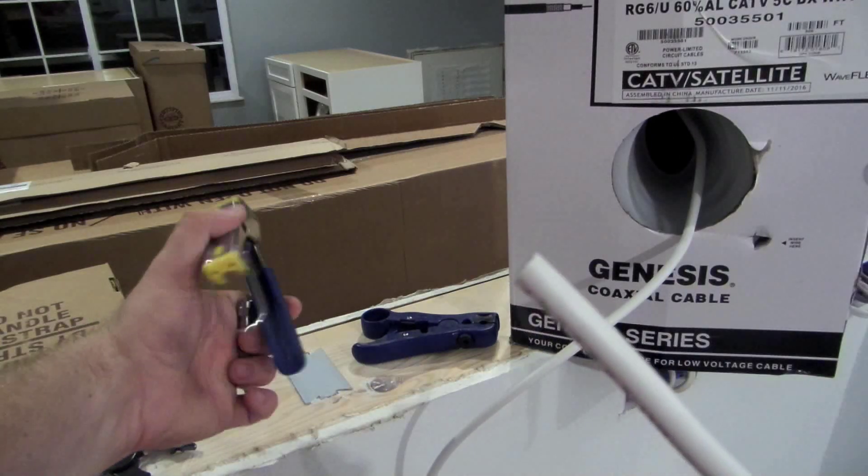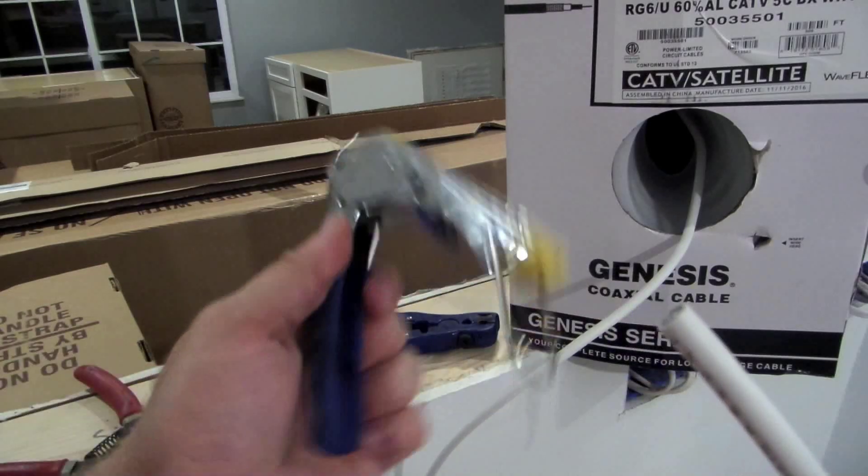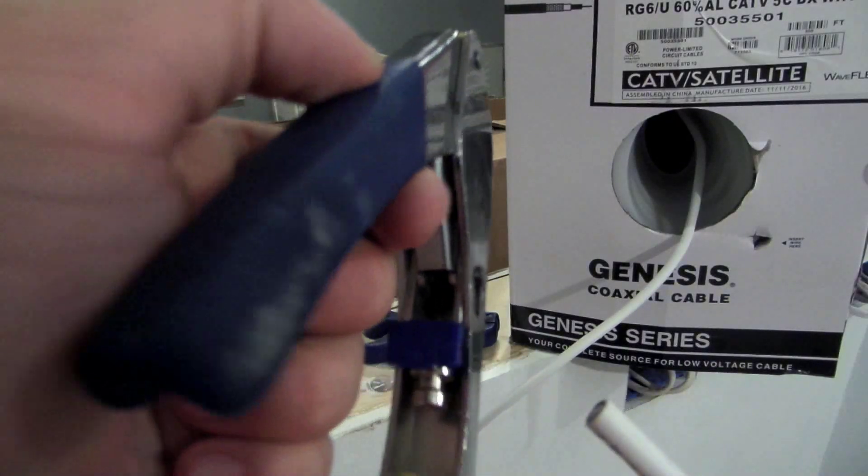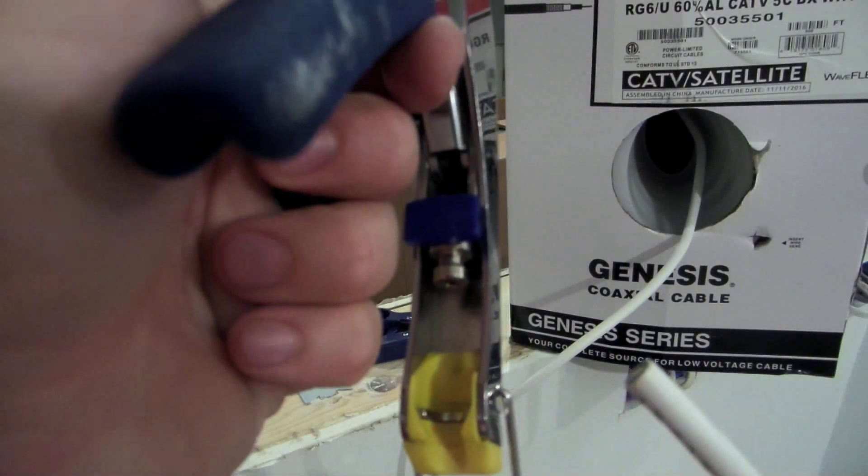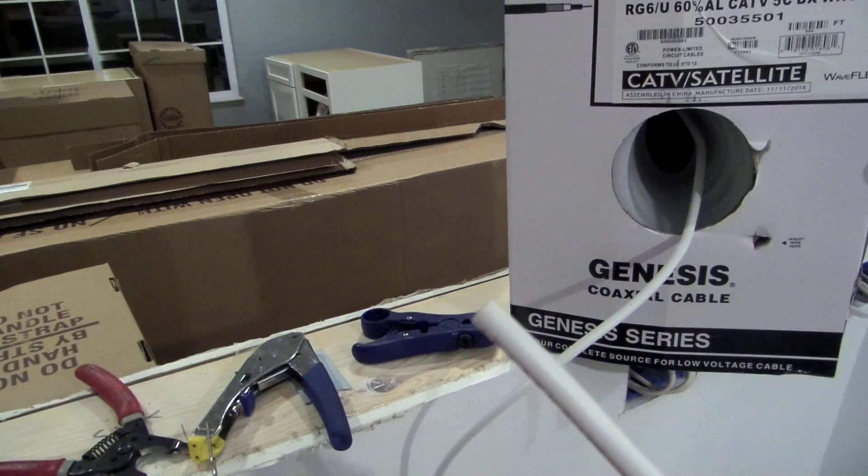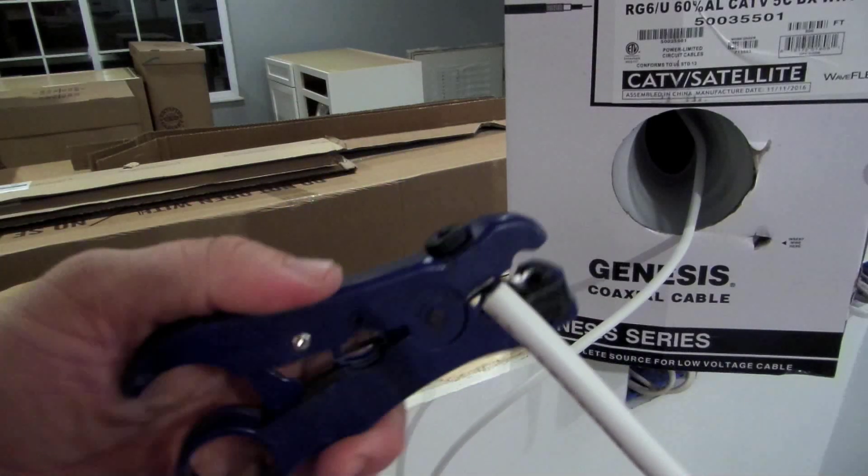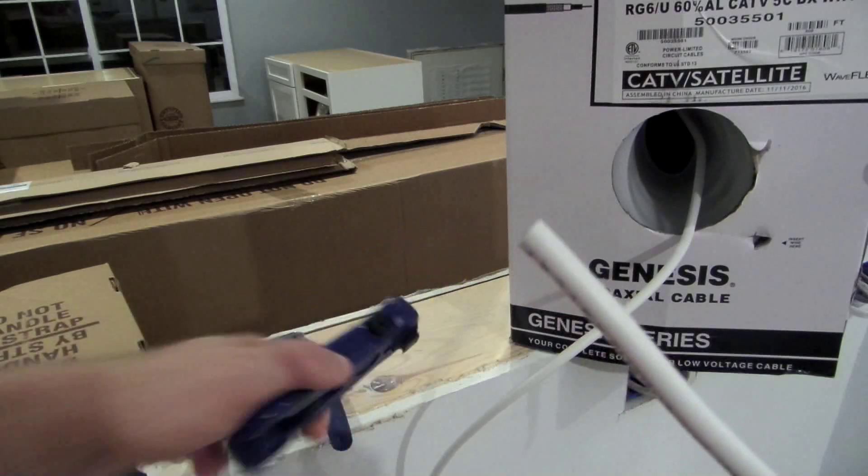This here is a crimping tool. It would come with one of those. It's got a special attachment inside that will allow you to crimp the end on here once we have it stripped. It comes with a special wire stripper. I'll show you how to use that.